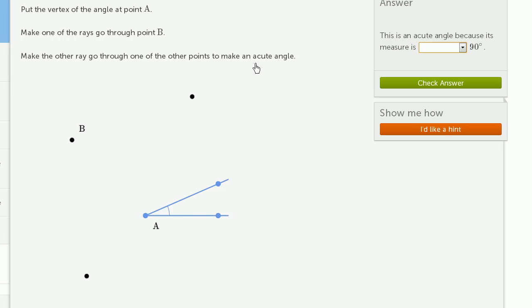So an acute angle is an angle less than 90 degrees. We can make one of these rays go through point B, and then we have to pick where to put the other ray to make it go through one of the other points.